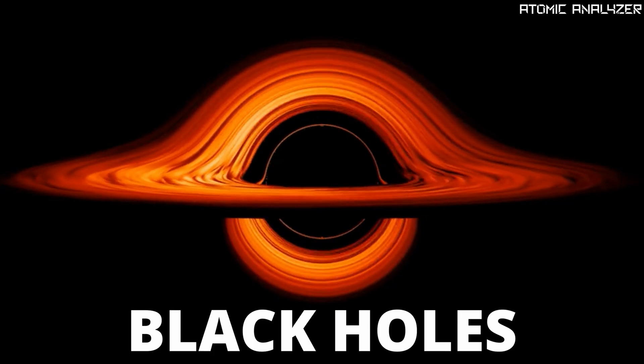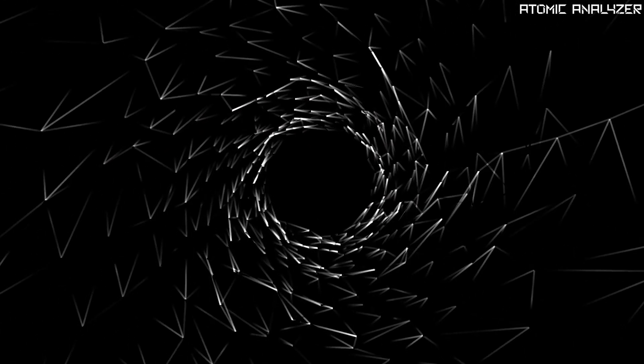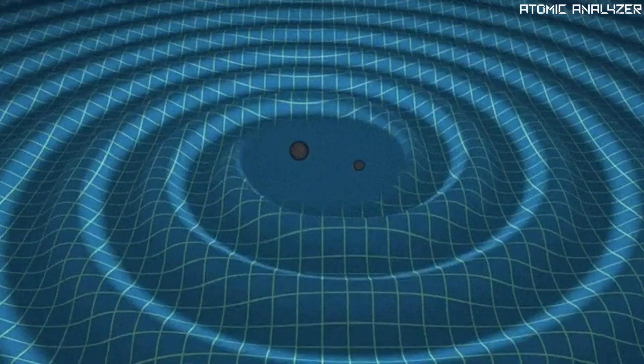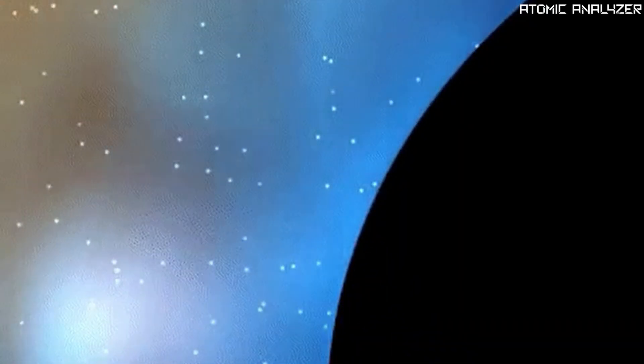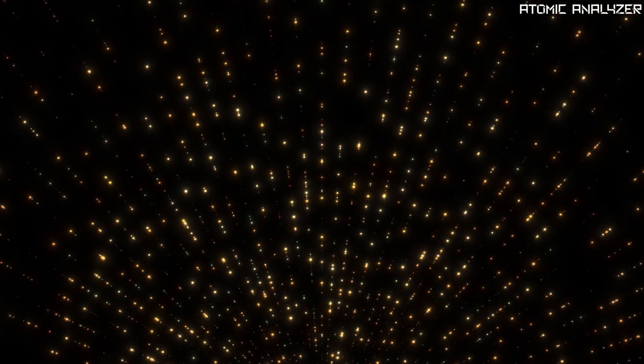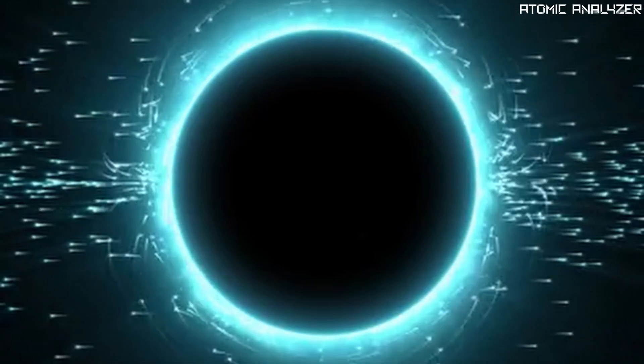To understand the nature of white holes, first we have to examine the much more familiar black holes. Black holes are regions of complete gravitational collapse where gravity has overwhelmed all other forces in the universe and compressed a clump of material all the way down to an infinitely tiny point known as a singularity.